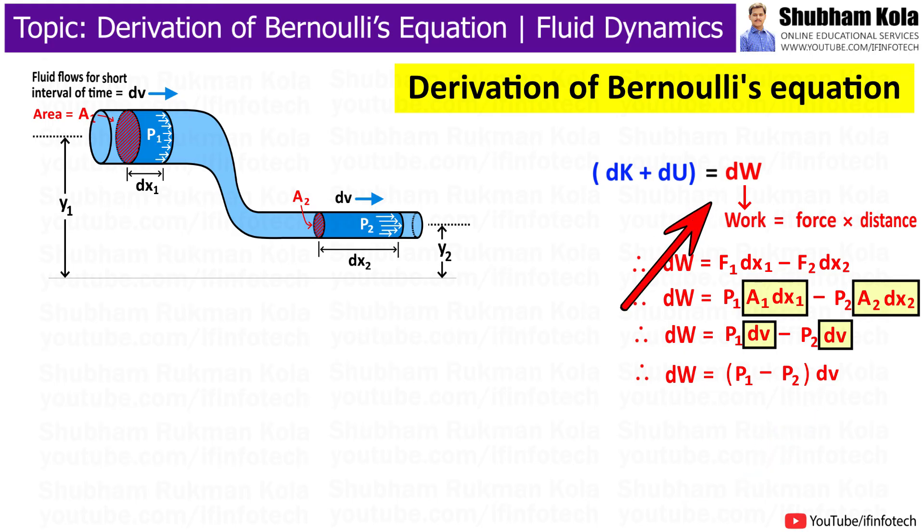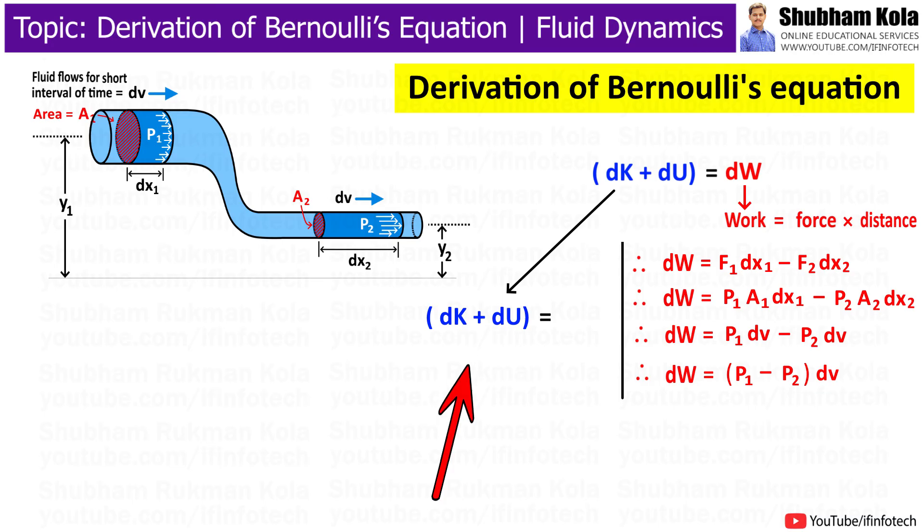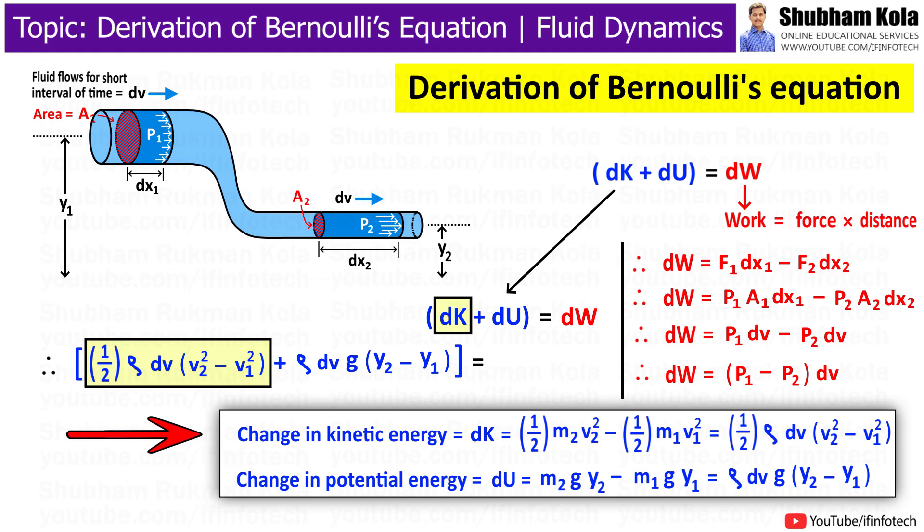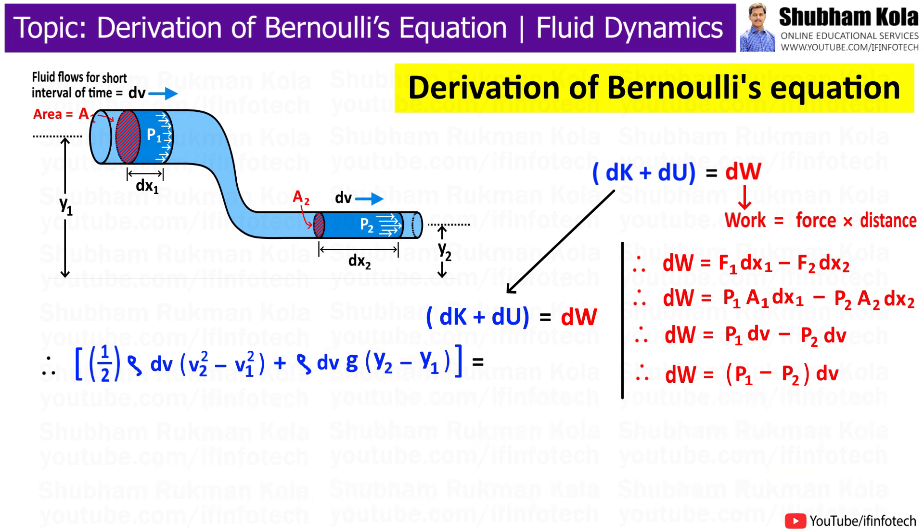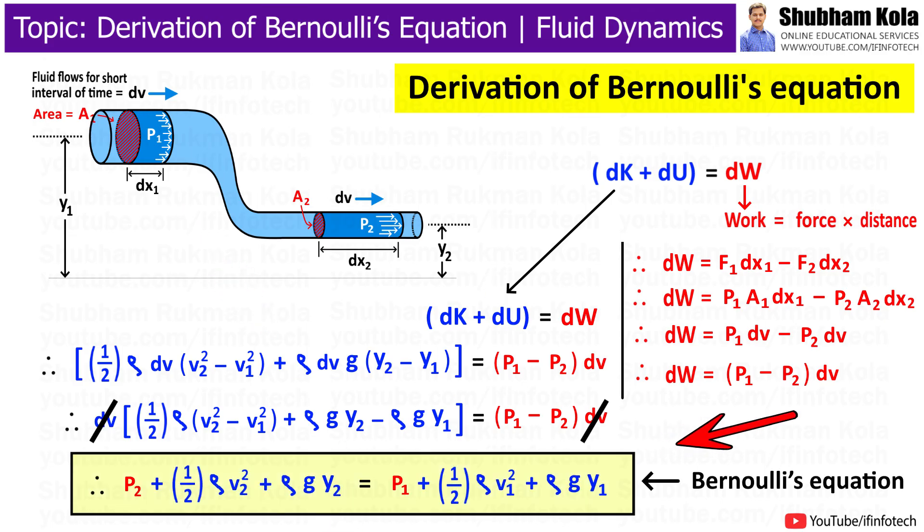Now, we have to address the left-hand side of this equation, where change in kinetic energy of the fluid is given by this equation, and the change in potential energy is given by this equation. I will substitute all the obtained values in equation. And after rearranging the above equation, we will get Bernoulli's equation.